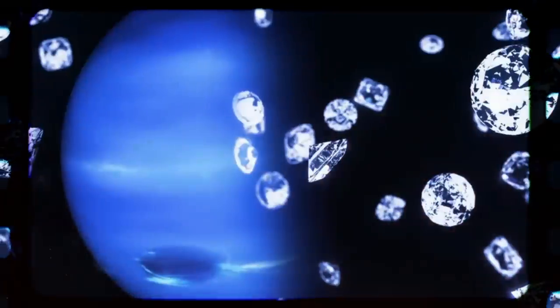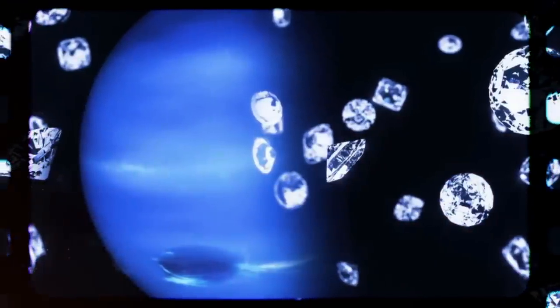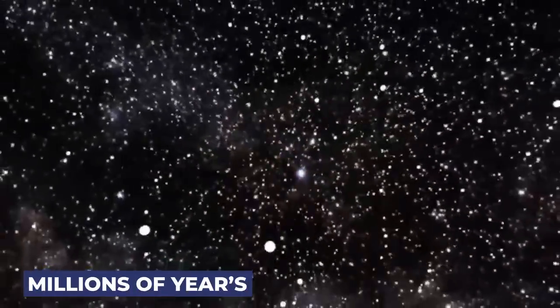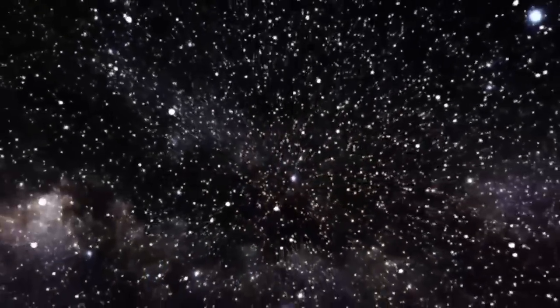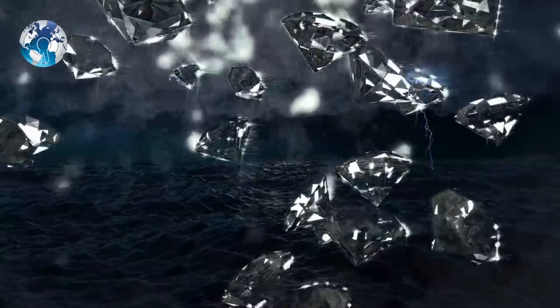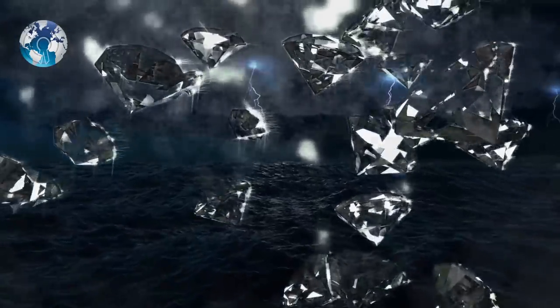The diamonds that would be formed in the atmosphere of Uranus and Neptune would be much bigger as they are produced on a much larger scale and in more definitive conditions. After these diamonds are formed, they sink to their planet's core over thousands of years. Just imagine millions of years' worth of diamonds lying beneath the planet's core. The thought of diamonds falling as rain somewhere in the cosmos is just mind-blowing.